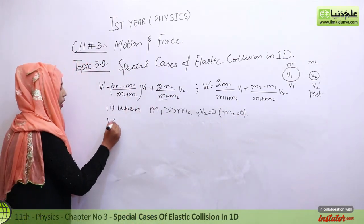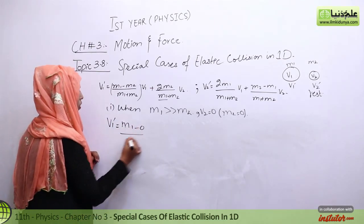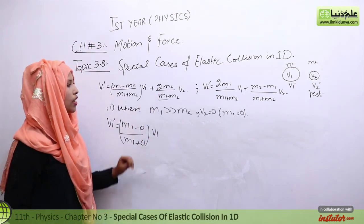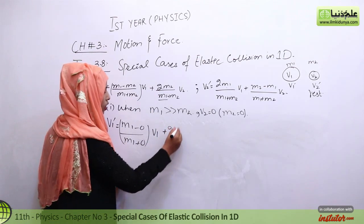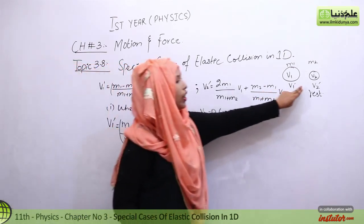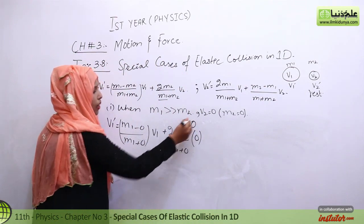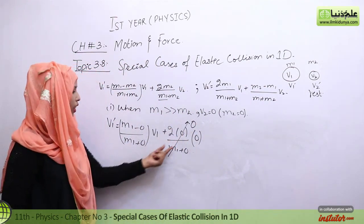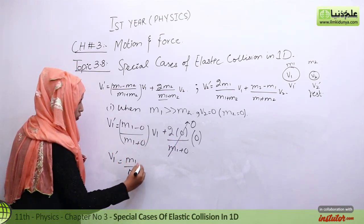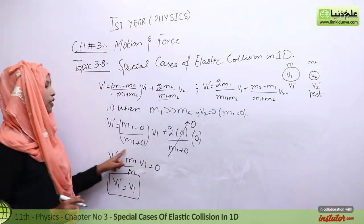Let's solve for v1'. With m2 equal to zero, the numerator becomes m1 minus zero and the denominator is m1 plus zero. The second term involves v2 which is zero, so that term is zero. Therefore v1' equals m1 over m1 times v1, which gives v1' equal to v1.